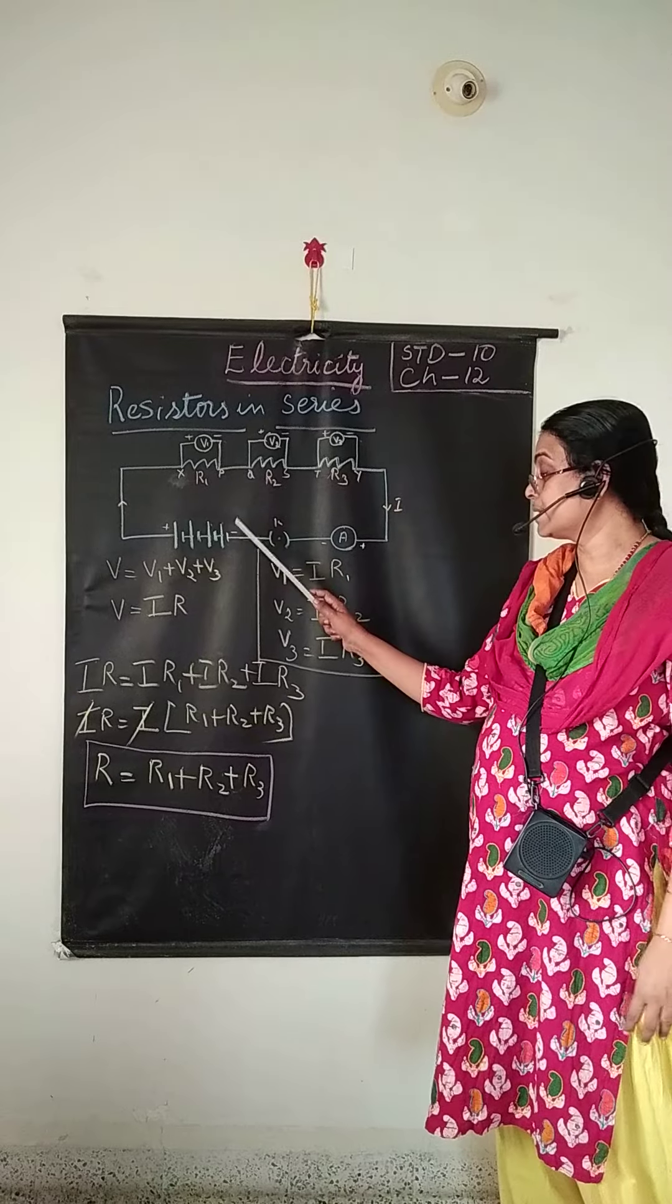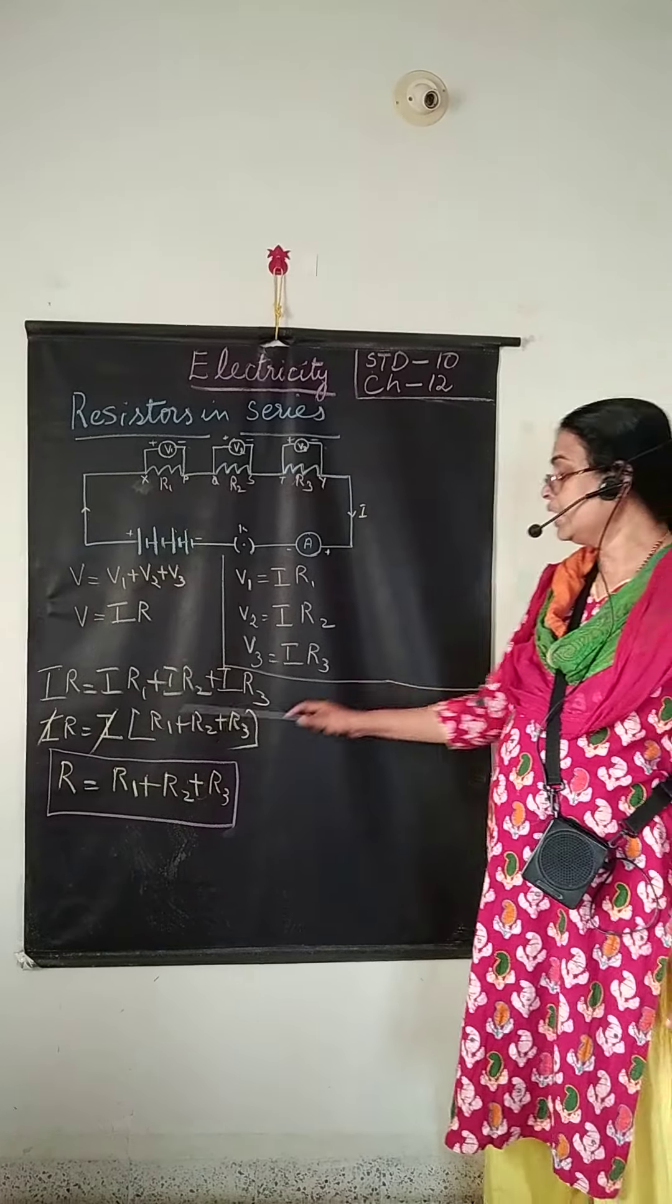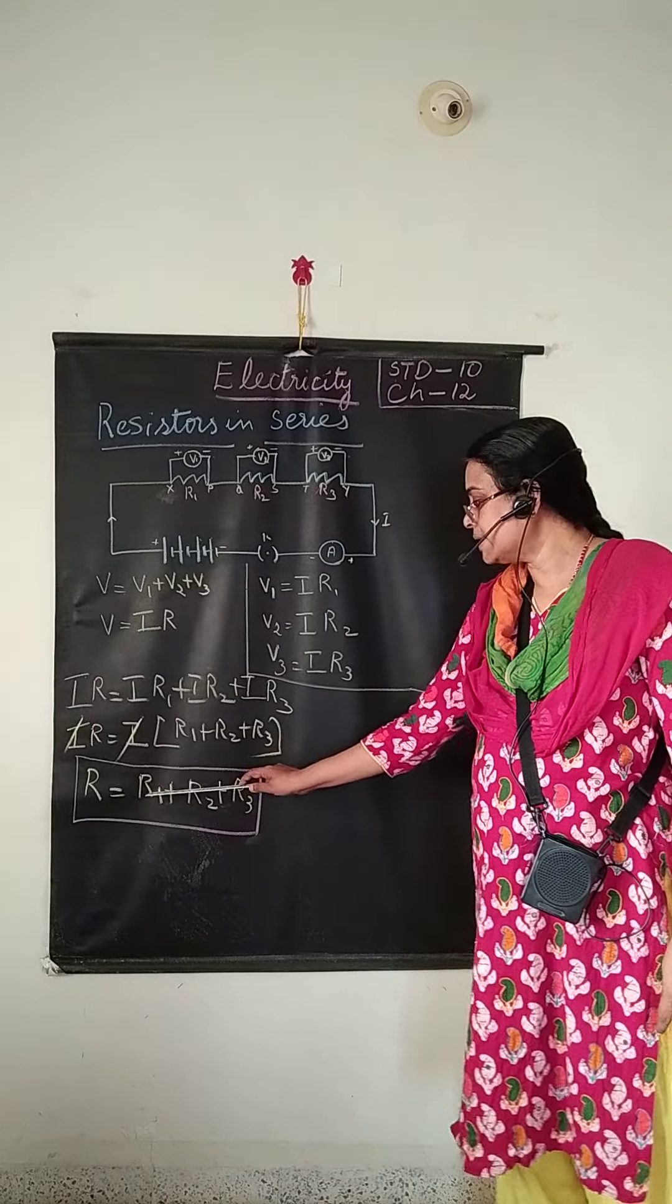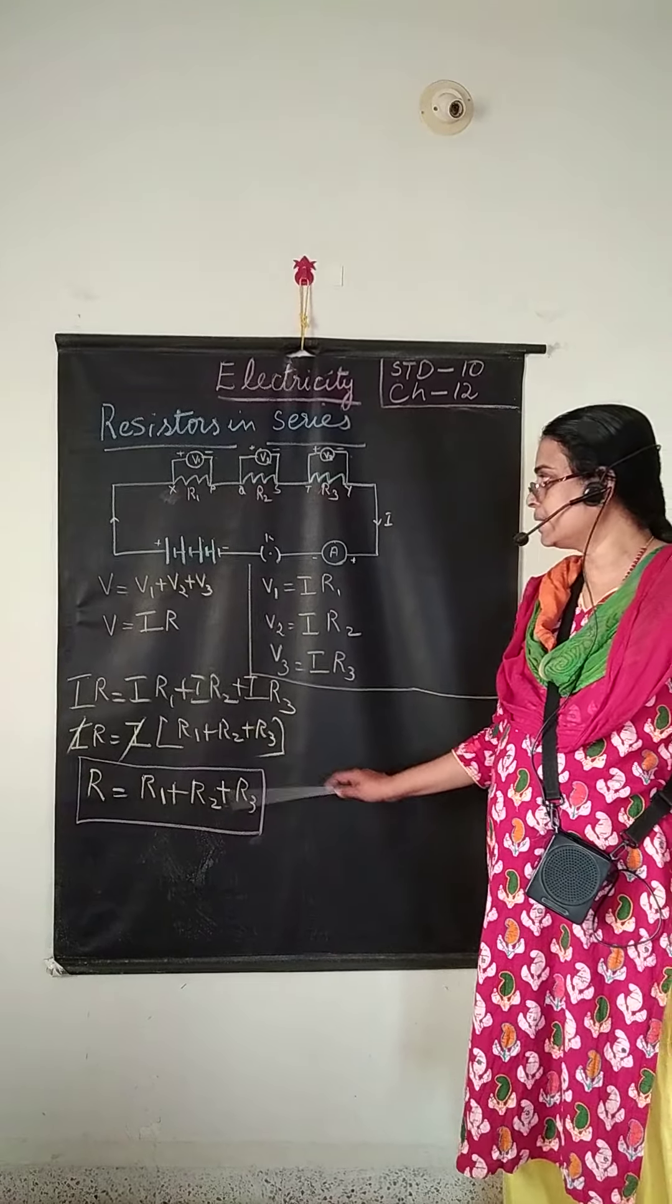If the resistors are connected in series, then equivalent resistance can be calculated. It will be equal to the sum of the resistors which is connected in series.